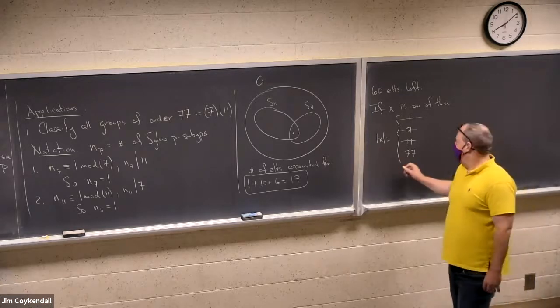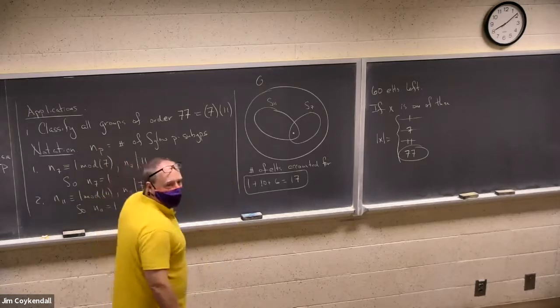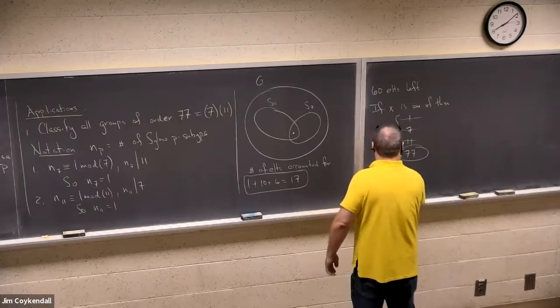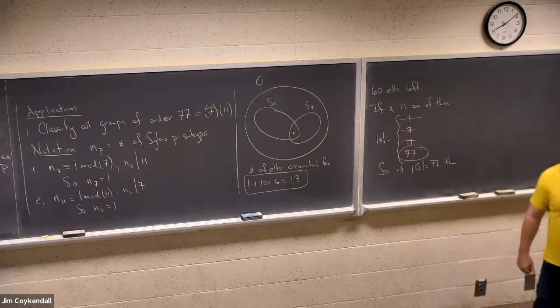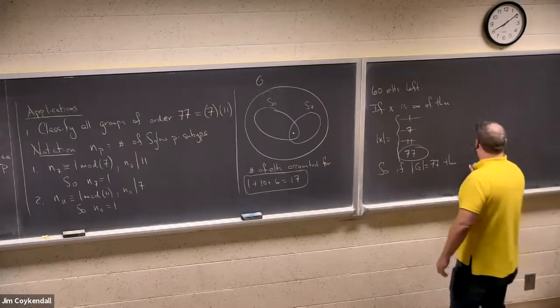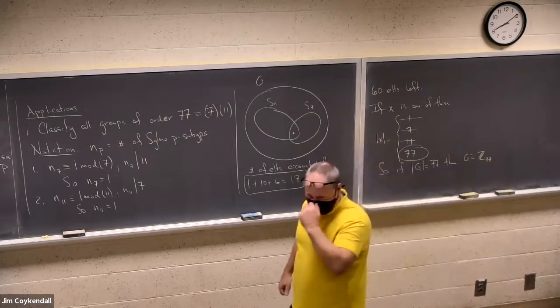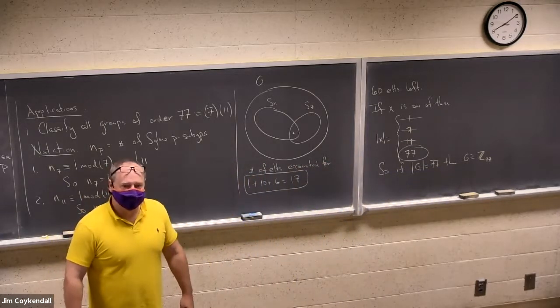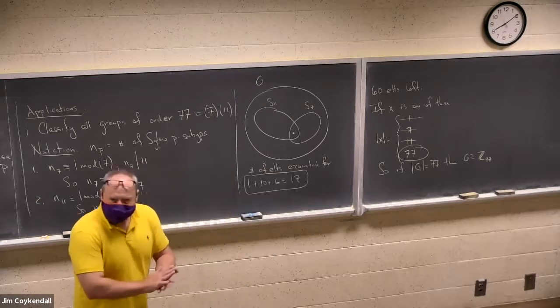Therefore, the order of X has to be 77. So what does that tell you about any group of order 77? Cycle that around in your brains and see if you can figure out what must be the structure of it. It must be cyclic. It's got an element of its own order. So any group of order 77 is isomorphic to Z mod 77.